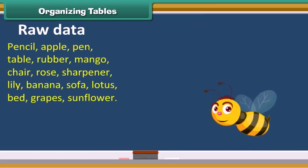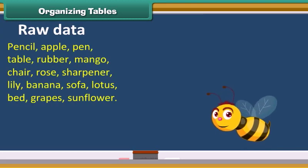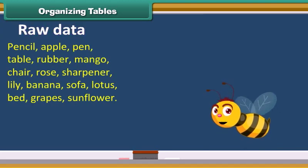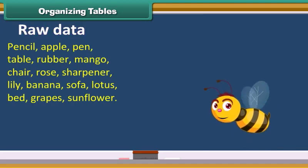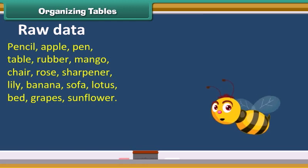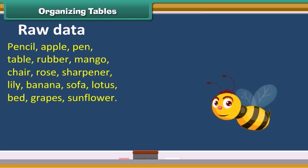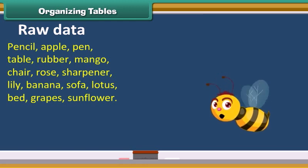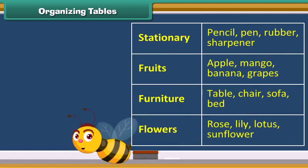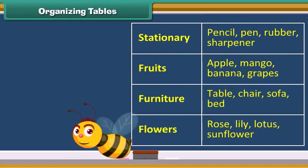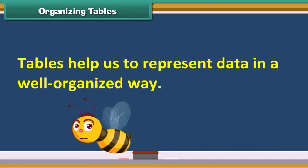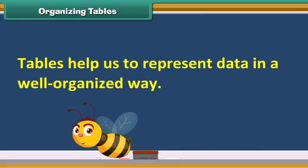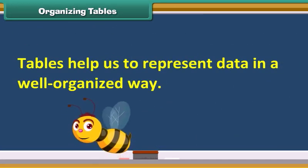Unorganized data is called raw data. The given data represents raw data. We can arrange this data properly by using a table. Tables help us to represent data in a well organized way.